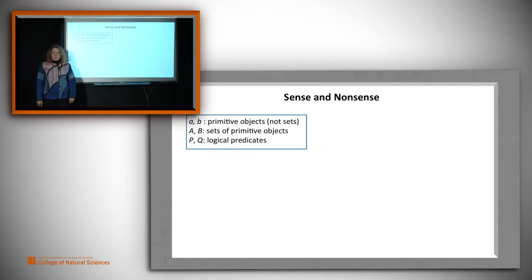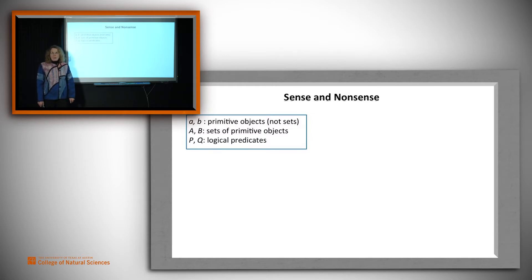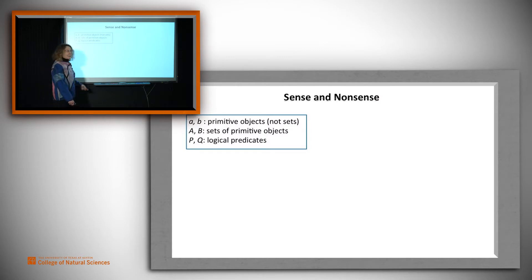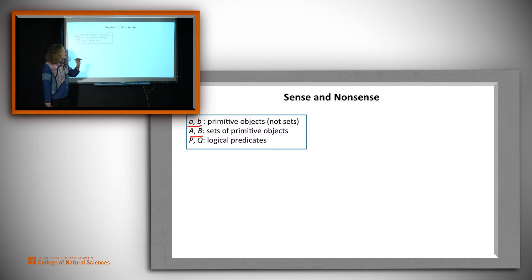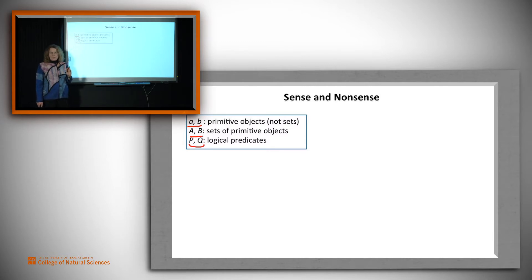We've defined a formal notation that lets us write clear statements, and it's important that we use it correctly and not write nonsense. So let's look at some examples. Let's imagine that a and b are primitive objects — they're not sets. Capital A and B are sets of primitive objects, and P and Q are logical predicates. What can we say with these things?